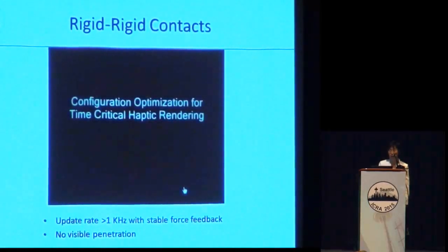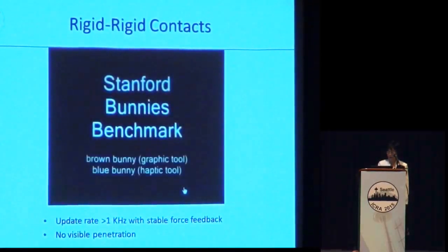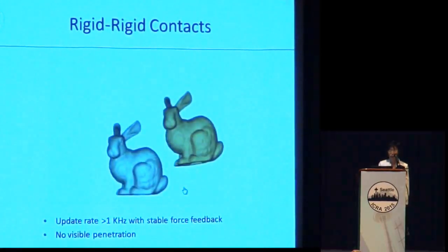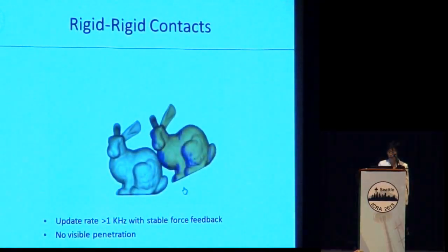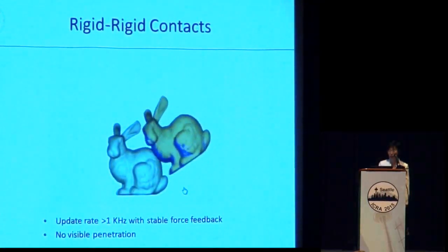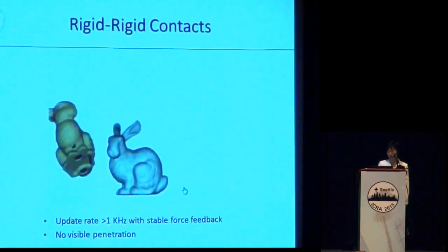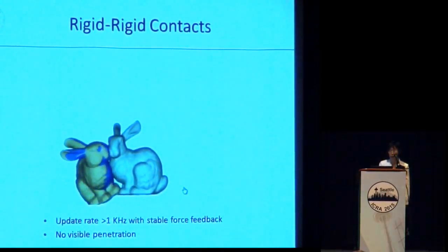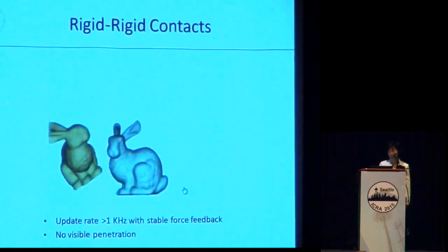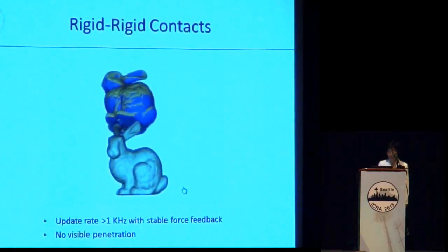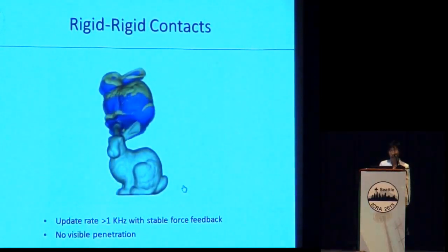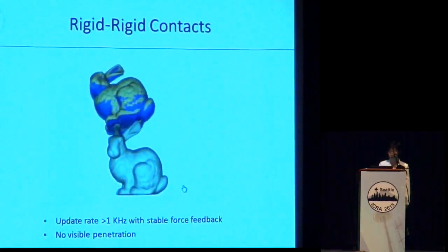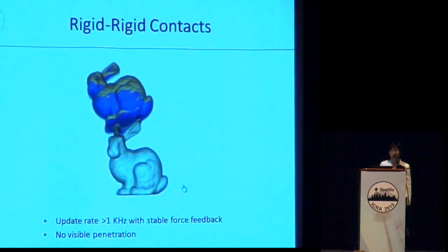We tested our method using several tasks. The first example is two bunnies interacting with each other, modeled using 3,000 spheres. The purple bunny penetrates into the static bunny, but the brown one stays on the surface. During the contact, there is multi-region contact between the two bunnies.